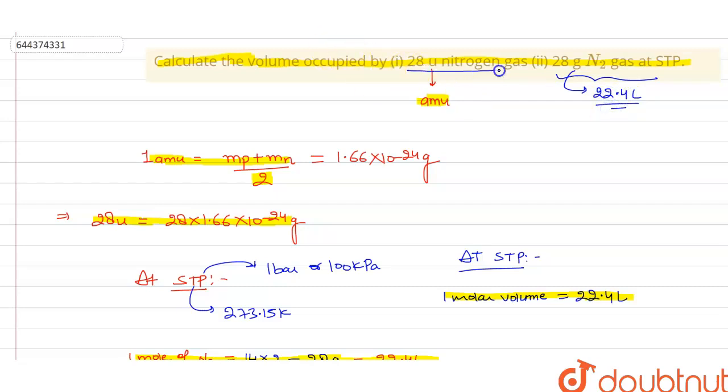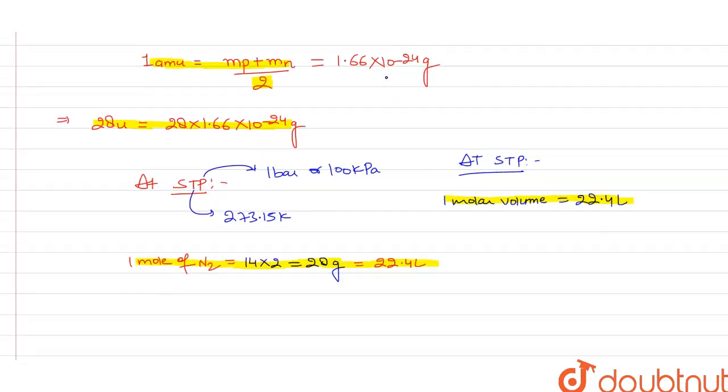Now our first question is the volume occupied by 28 atomic mass unit of nitrogen gas. So 28 u is equal to 28 × 1.66 × 10^-24 gram, and we know that the 28 gram is equal to 22.4 liter at STP.